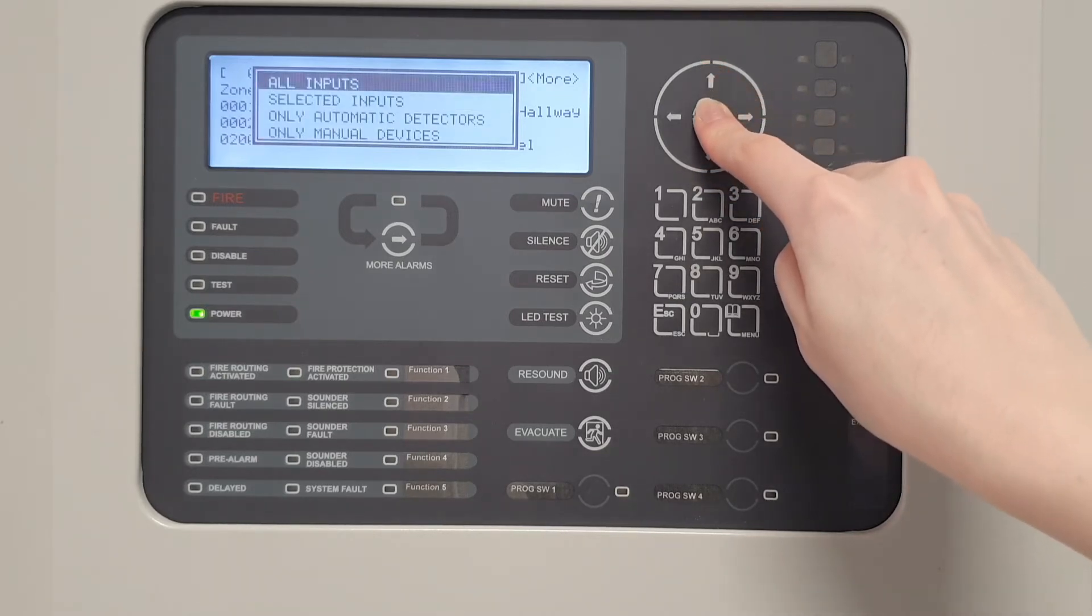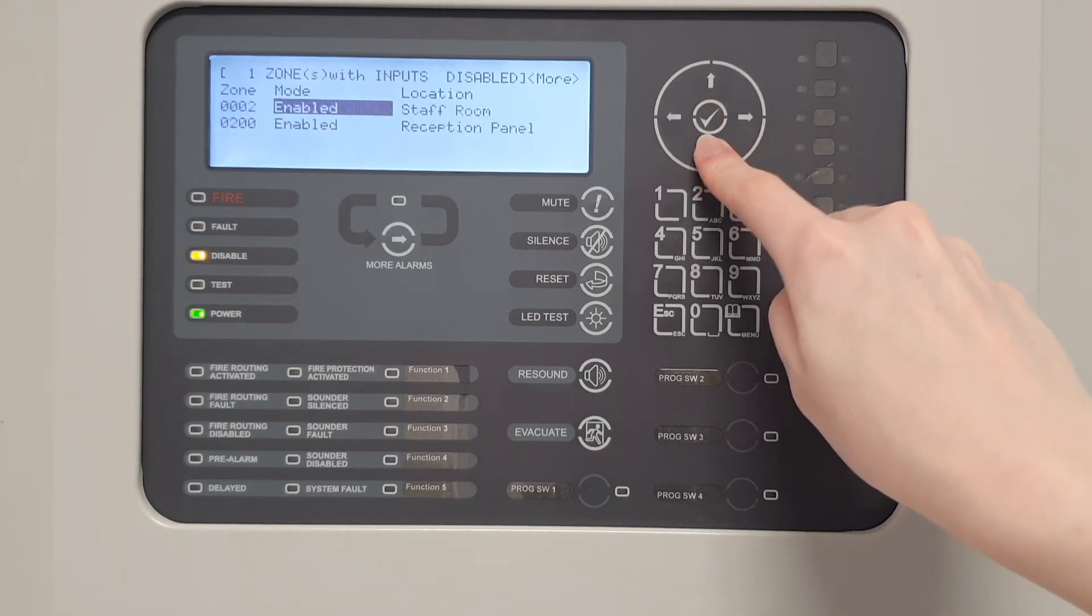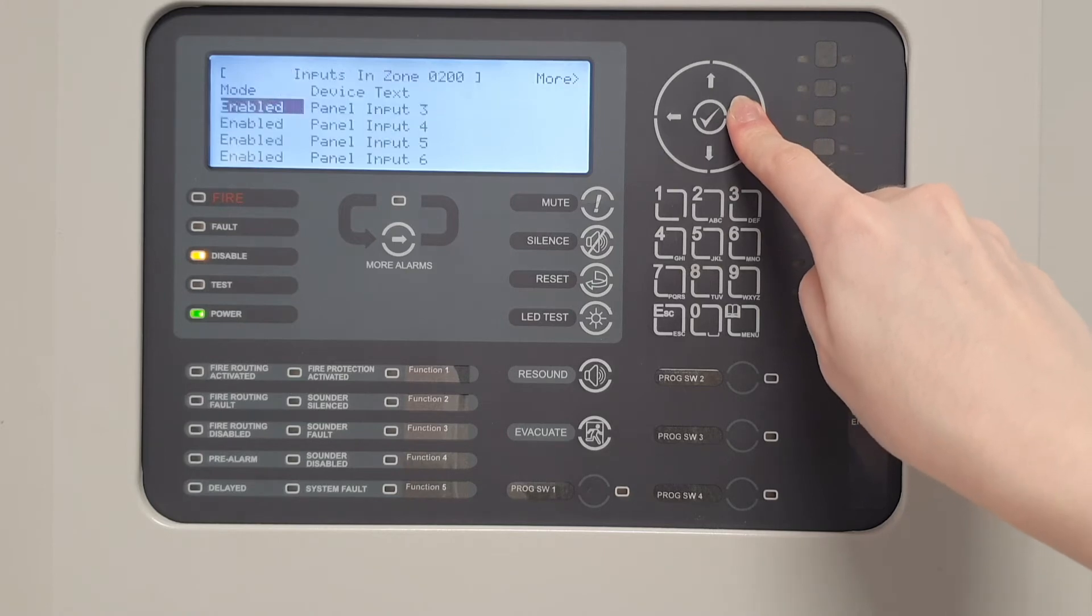The mode will change from Enabled to Disabled once a selection is made. A specific device can also be disabled by scrolling down to the zone which the device is in and then scrolling across to view the devices in that zone.